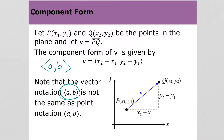So to find a vector between its initial point and its terminal point, you would subtract the terminal minus the initial x values, and then the terminal minus the initial y values.